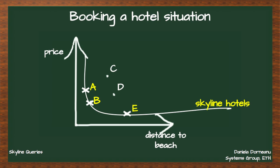In order to compute the Skyline, we want to eliminate all the hotels that are both more expensive and further from the beach. After you eliminate all these hotels, you are left with the Skyline, which in the example is A, B, and E.